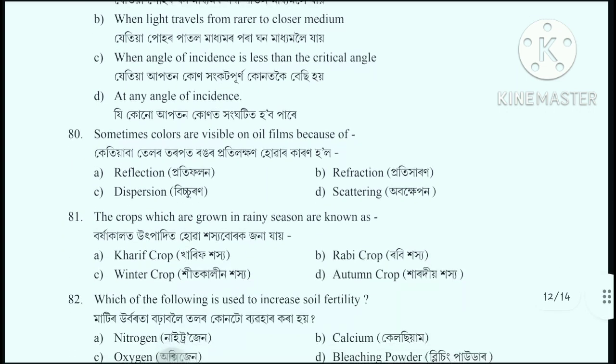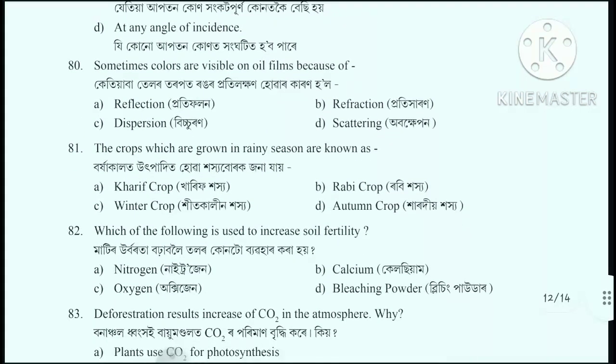Question number 80: Sometimes colors are visible on oil films because of - when colors appear on oil films. The correct answer is option C: Dispersion (scattering/dispersion of light).